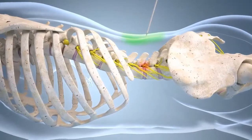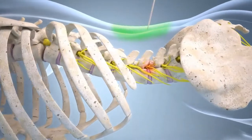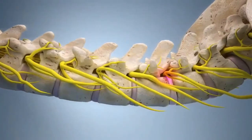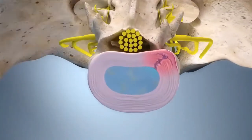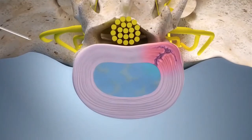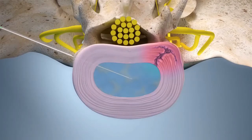After tissue desensitisation, we carefully insert a guiding needle to the edge of the disc. When confident about the precise location of the guiding needle, we insert an even thinner needle through to the disc's inner layer.